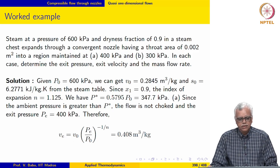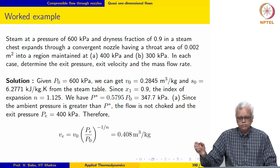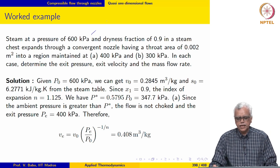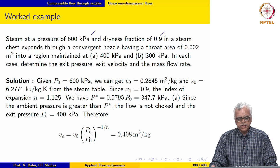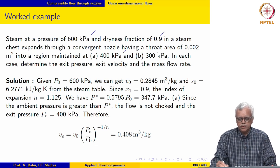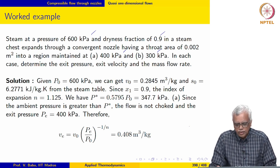In this lecture, we will work out a few examples involving flow of steam through a nozzle. The first example: steam at a pressure of 600 kPa and dryness fraction 0.9 in a steam chest expands through a convergent nozzle having a throat area 0.002 m² into a region maintained at (a) 400 kPa and (b) 300 kPa. In each case, determine the exit pressure, exit velocity, and the mass flow rate.